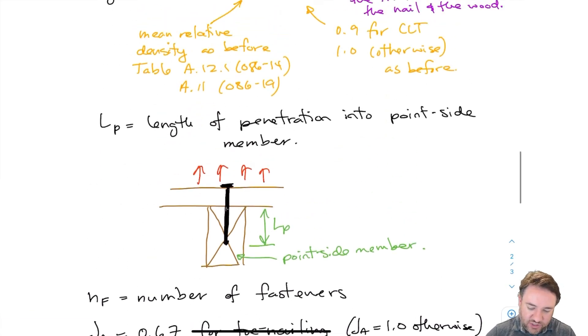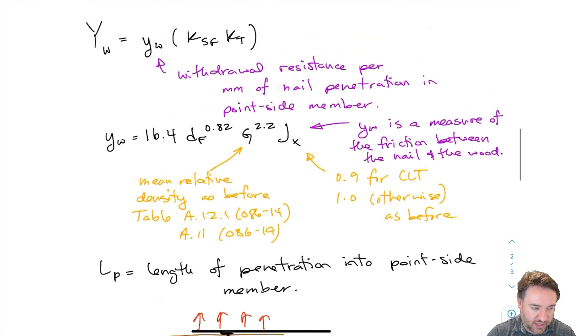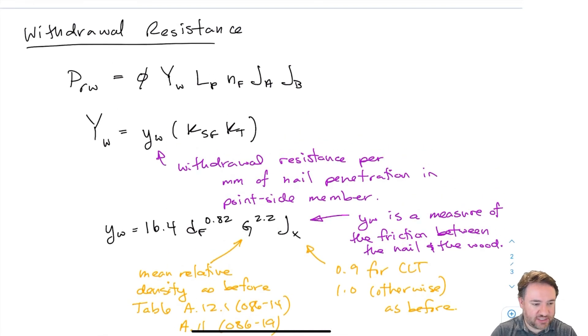Okay so that's it. Once I have NF, JA, JB, I find my length of penetration and I calculate my unit resistance, basically my unit withdrawal resistance YW, I modify that by KSF KT to account for service condition and treatment factors. And I have my phi factor, the phi factor I forgot to put in here which is 0.6 for withdrawal. And then I multiply all those together and I get my PRW and I'm done.